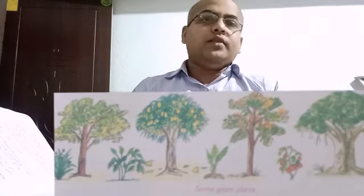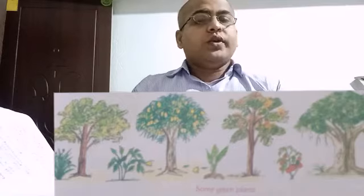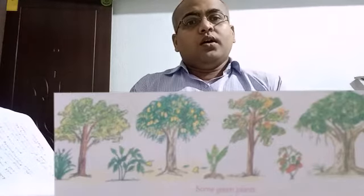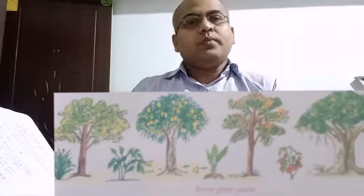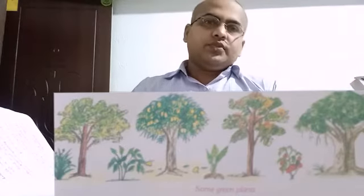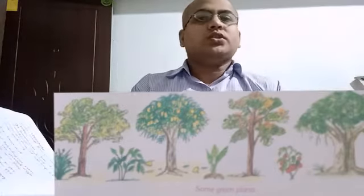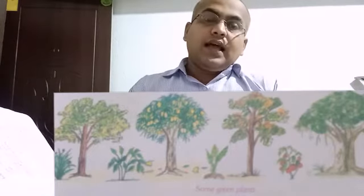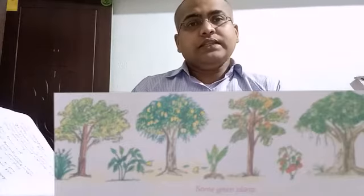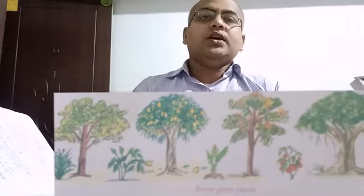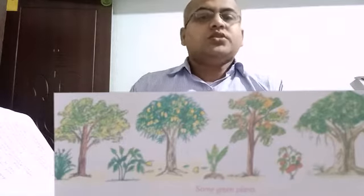We all know that plants prepare food for the whole animal world, and also they refresh and clean the air by absorbing carbon dioxide and releasing oxygen into the atmosphere. This food and oxygen is used by the animals, and the animals release carbon dioxide into the atmosphere, which is used by the plants.